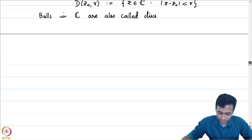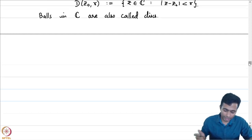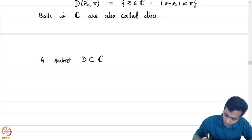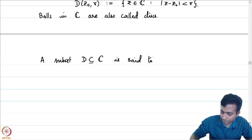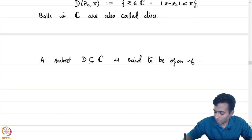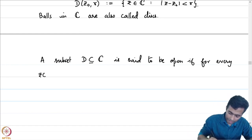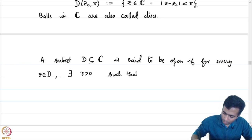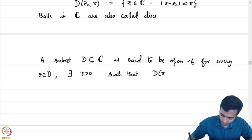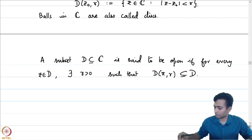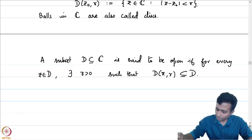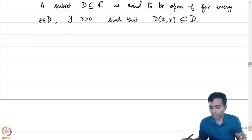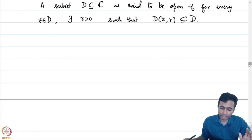Let us now recall the definition of what it means for a set to be open in a given topological space. A subset D contained in C is said to be open if for every z in D, there exists some positive real number r such that the disk of radius r around z is contained in D. This is another way of saying that z is an interior point. If every point in D is an interior point, then we say that D is an open set.